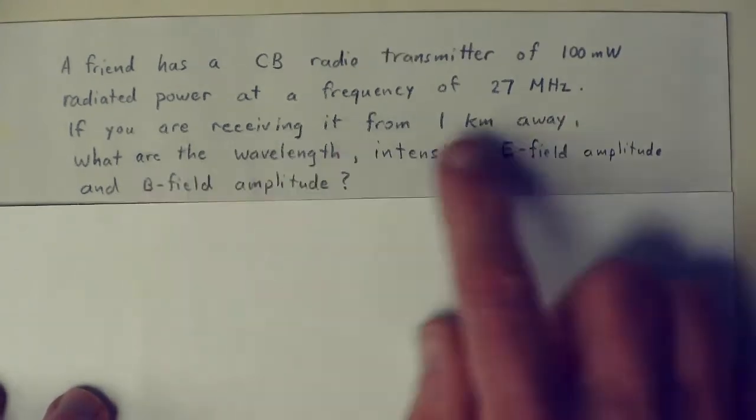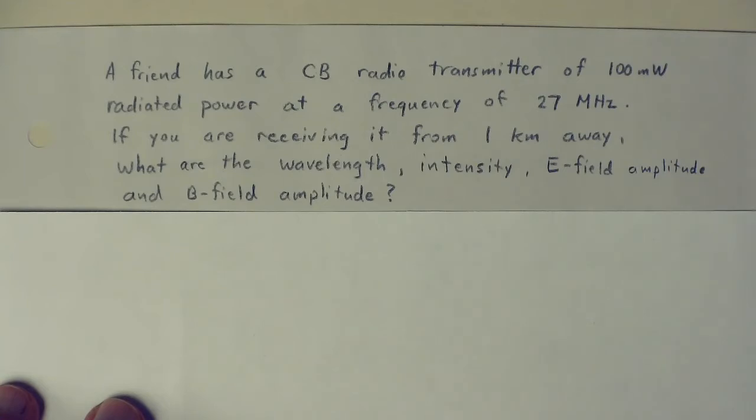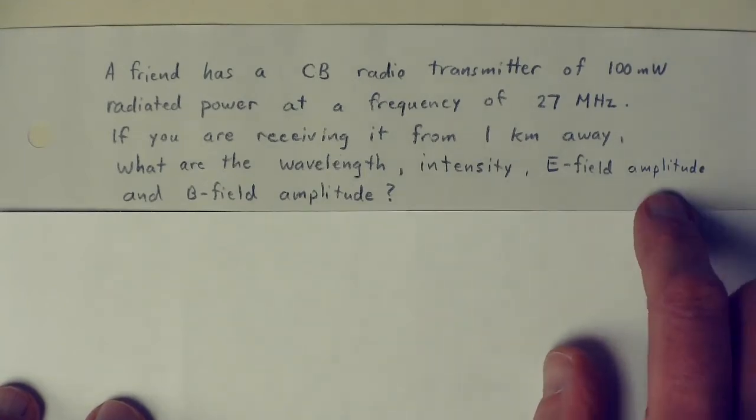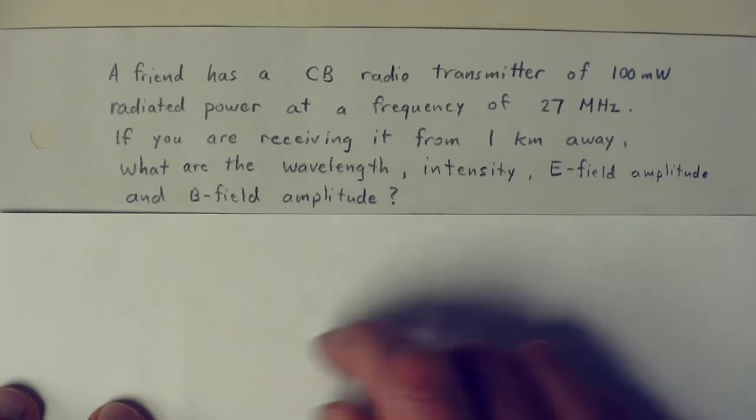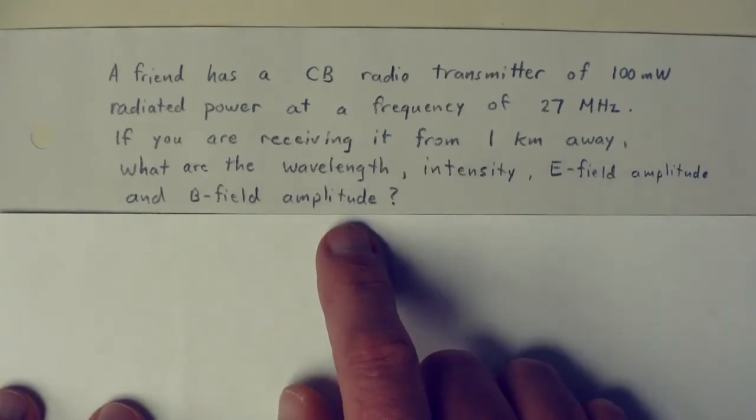And you're receiving it from one kilometer away. And the question is, what are the wavelength, the intensity, the electric field amplitude, and the B field amplitude? Can we figure out all these things?